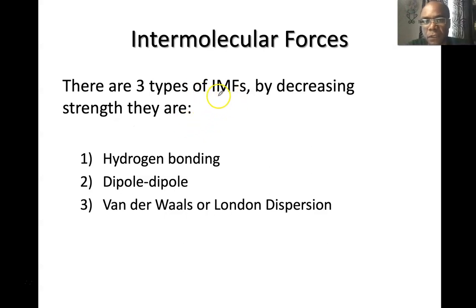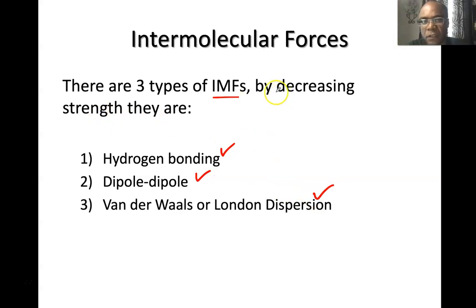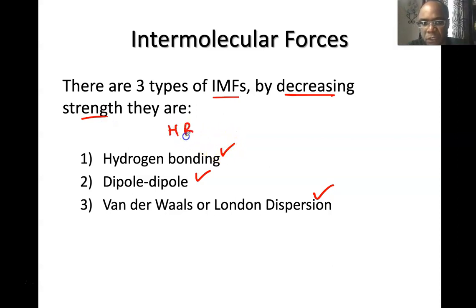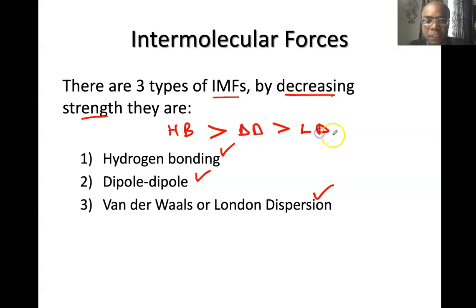There are three types of intermolecular forces listed by decreasing strength: the first is hydrogen bonding, which is stronger than dipole-dipole, which is stronger than van der Waals forces — also known as London dispersion. So hydrogen bonds are stronger than dipole-dipole, and dipole-dipole are stronger than London dispersion.